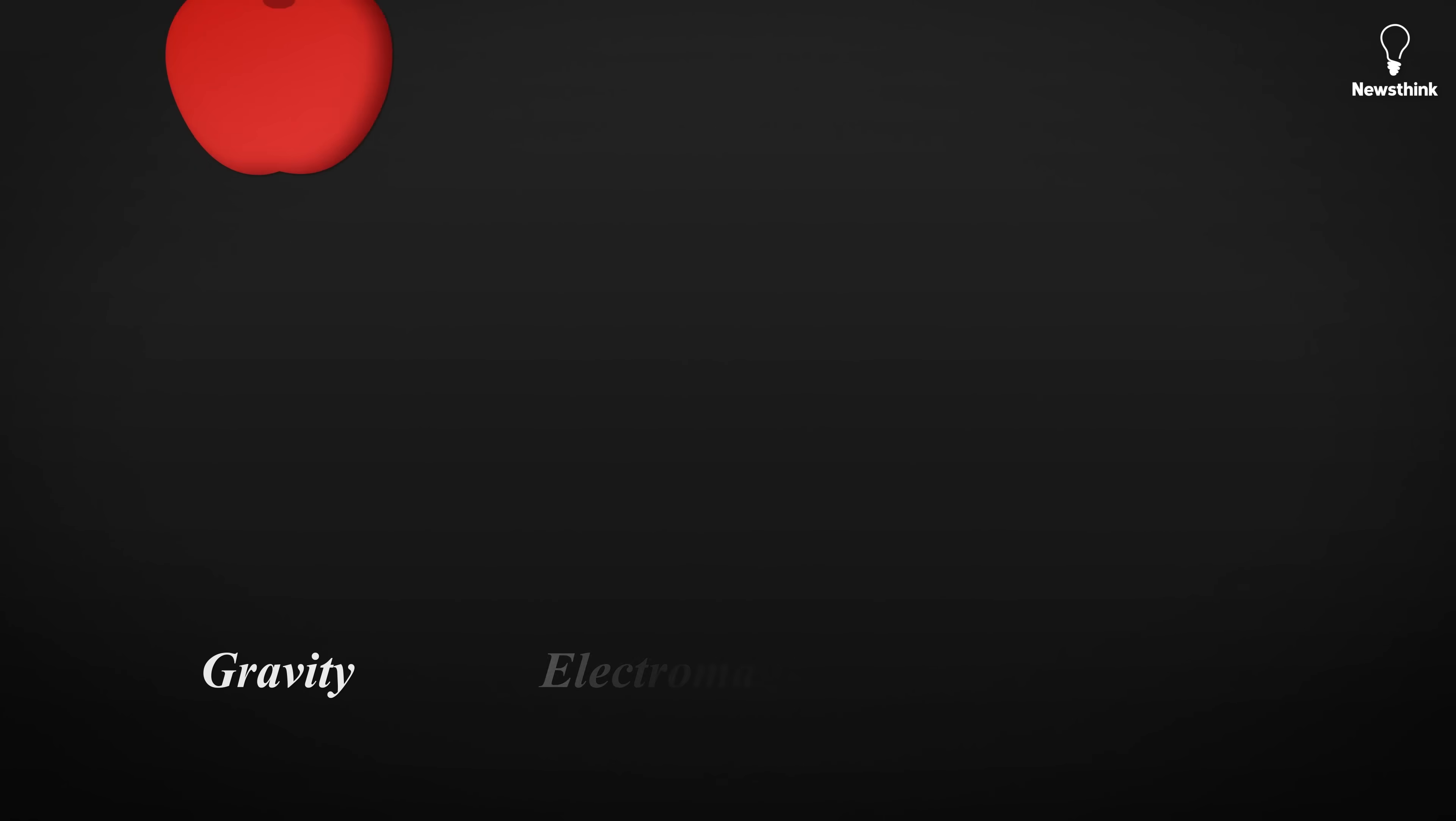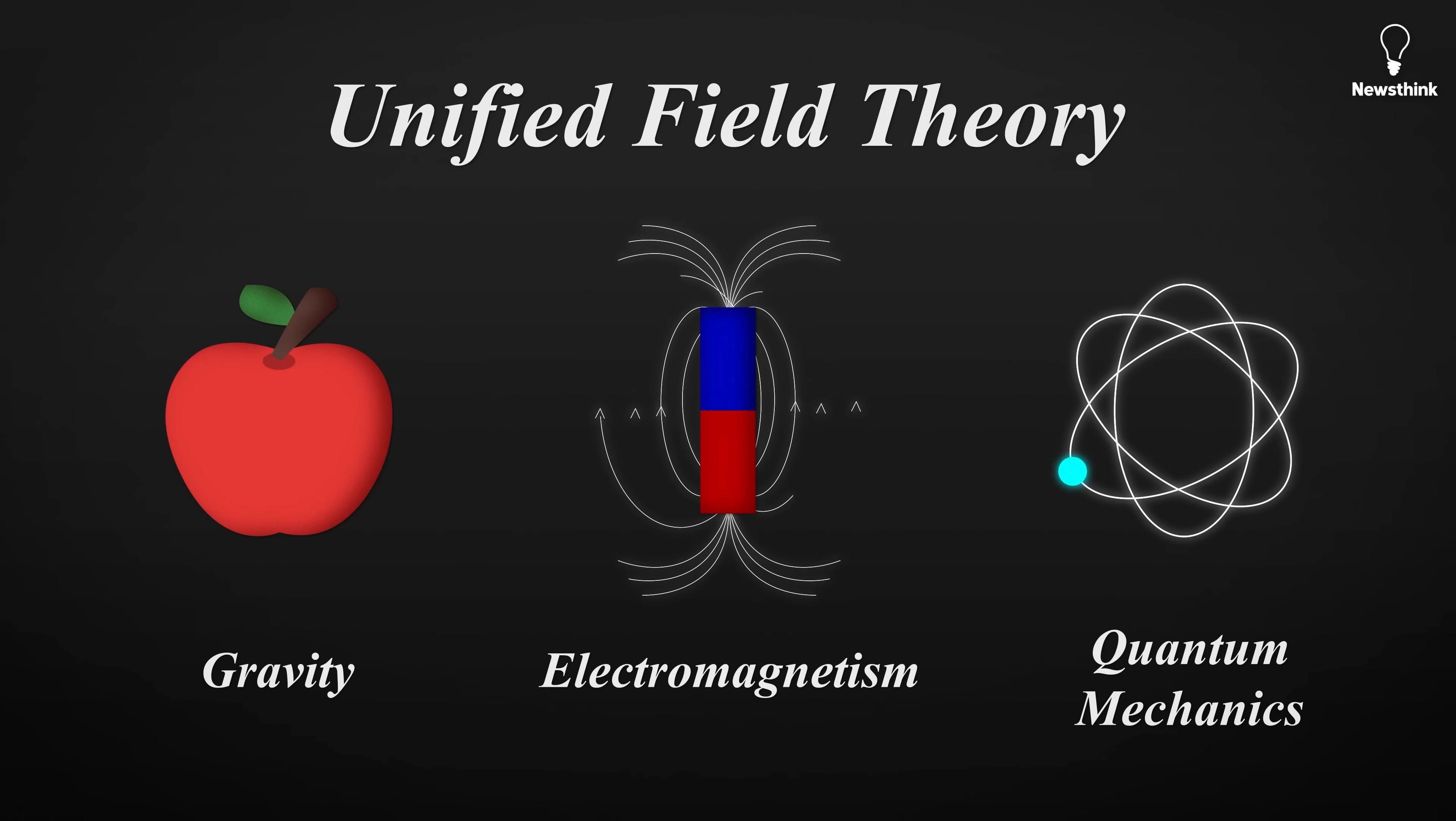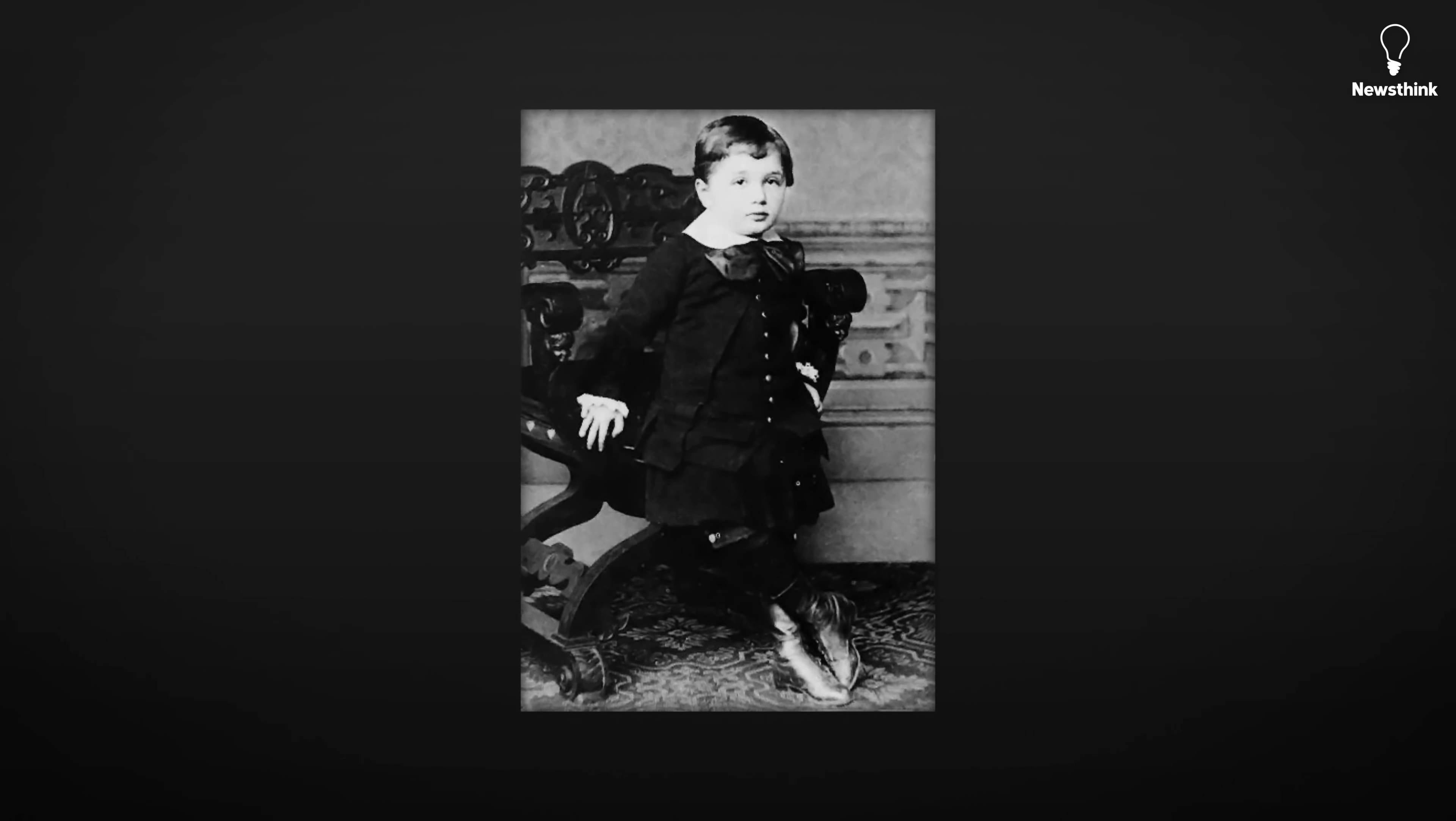Einstein could have stopped there, he was already a legend, but he wanted more. He longed for something deeper, a single, elegant framework that could explain all the forces of nature. Gravity, electromagnetism, even the strange new world of quantum mechanics, all woven together under one unified theory. That search for hidden unity began when Einstein was just four or five years old.